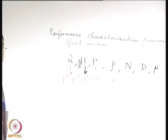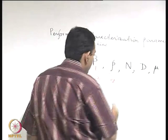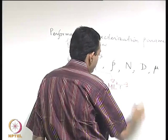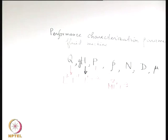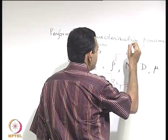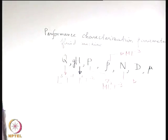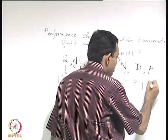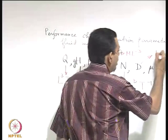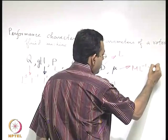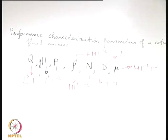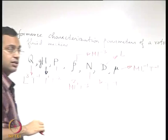Power has dimension M·L²·t⁻³ - it is just force times velocity. Density is kg per meter cube: M·L⁻³. RPM n has dimension t⁻¹. Diameter d has dimension L. Viscosity has dimension M·L⁻¹·t⁻¹. So how many fundamental dimensions are there? M, L, and t - 3 fundamental dimensions. And how many parameters are there? 7. So we expect 7 minus 3, that is 4, non-dimensional pi terms.